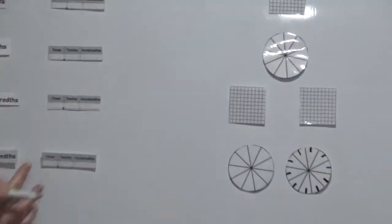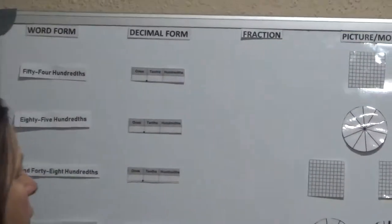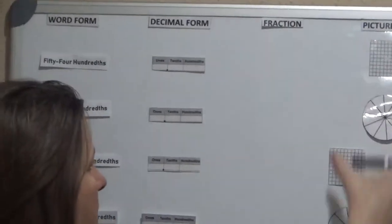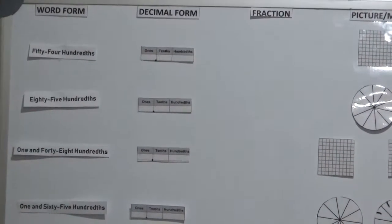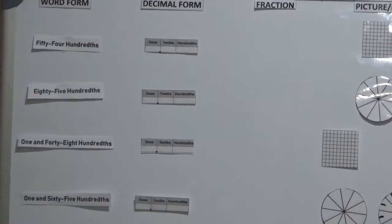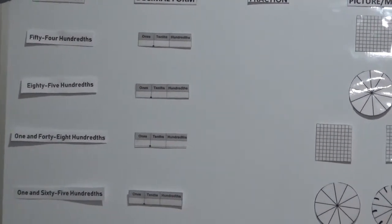We have four representations: word form, decimal form, fraction, and picture model. And it has to be in tenths and hundredths.